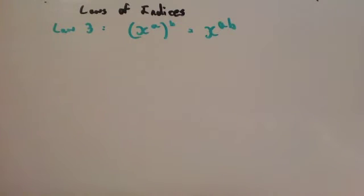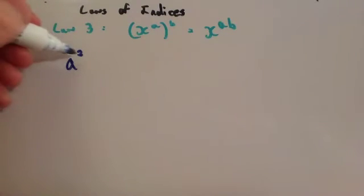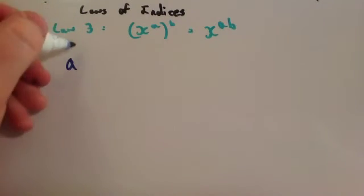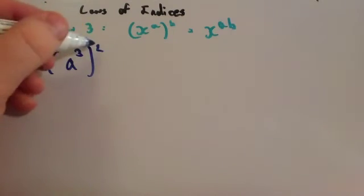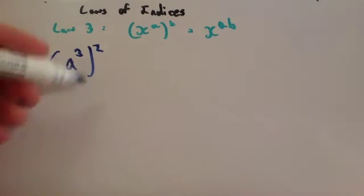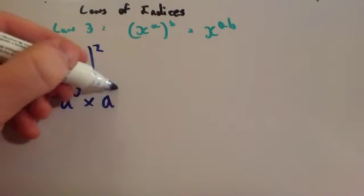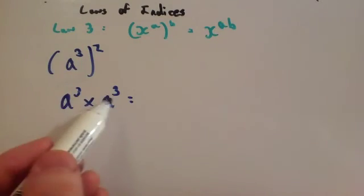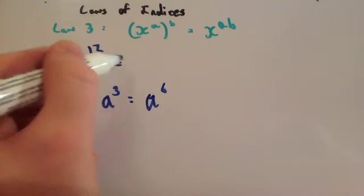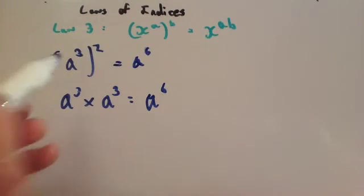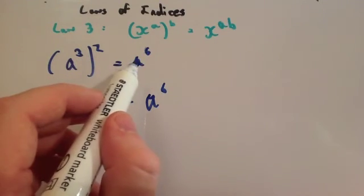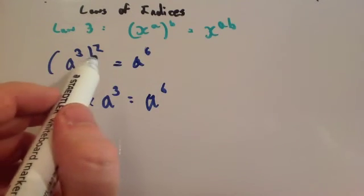Okay, let's see why that's the case. If you had a cubed squared, that means squared means you times by itself, so you have to do a cubed times itself. So this means you're going to do a cubed times a cubed. Remember from law 1, you add the powers, so you do 3 plus 3, which would be a to the 6. Notice a quick way of doing that: if you do 3 times 2, you get 6. So if you times the power and the power, you get your new power. So a to the power of 3 squared is a to the power of 6.